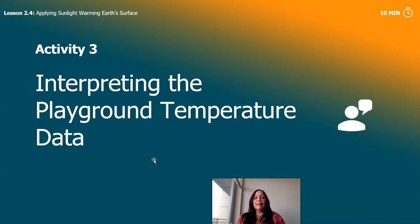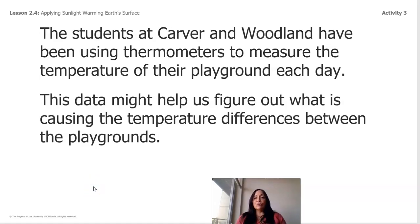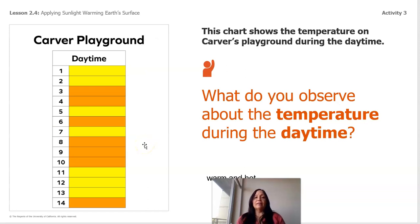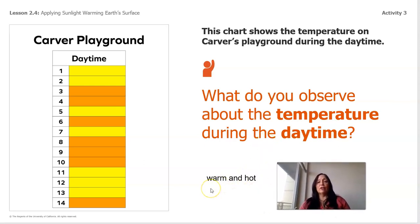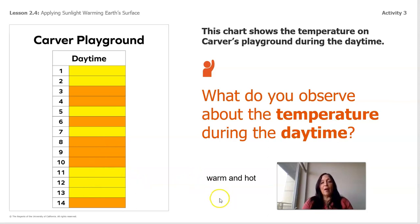Now we're going to interpret the playground temperature data. Remember, data is the information that we record. The students of Carver and Woodland have been using thermometers to measure the temperature of their playground each day. The data might help us figure out what is causing the temperature differences between the playgrounds. This is Carver playground in the daytime — and what do you observe? The temperature changes throughout the day, but it's either warm or hot — warm and hot all day.